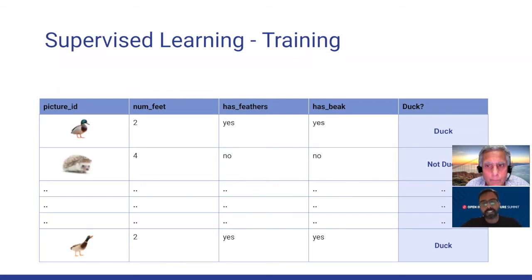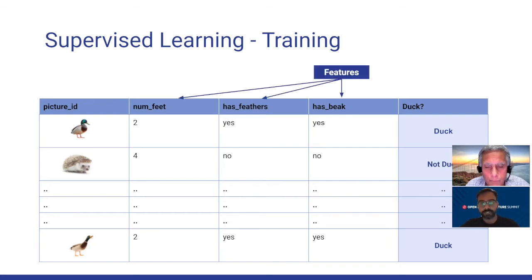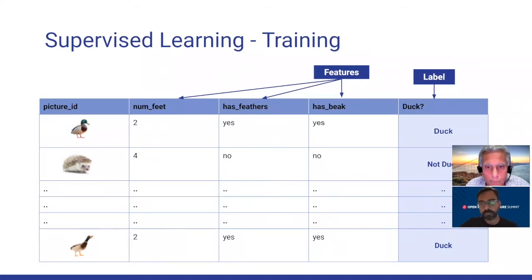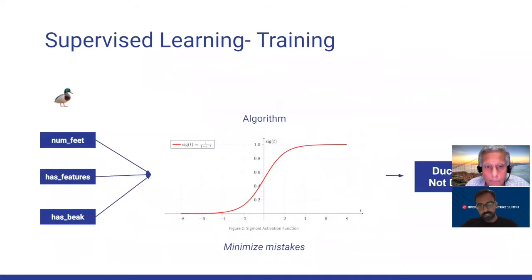For supervised learning, we actually need to give the dataset as well as a set of labels. The dataset means a picture as a data point with a set of features, which are typically human-defined. So the first image has two feet, has feathers, and has a beak — those are the features — and then a label. We're letting the computer know that the first image is a duck, and the second is not, and so on.